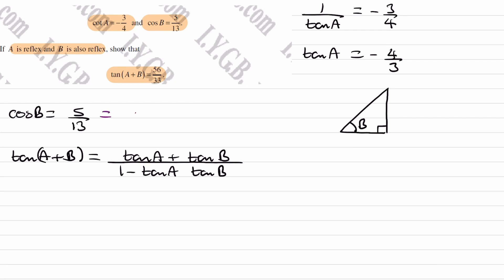We know that cos B is equal to 5 over 13. This is the adjacent over hypotenuse using SOHCAHTOA, and then fitting that into our triangle, the adjacent is 5, the hypotenuse is 13. And then using Pythagoras with this triangle, we end up with this side being 12.